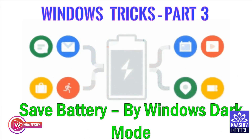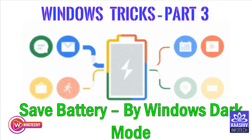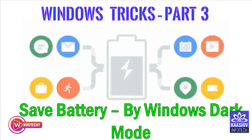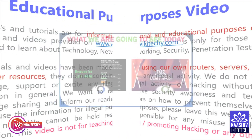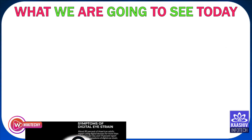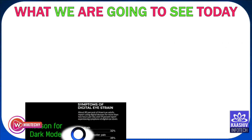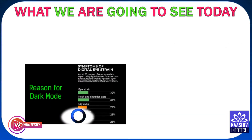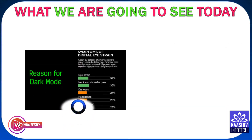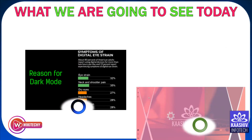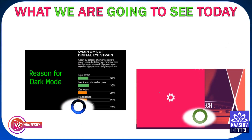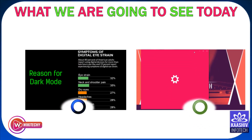So here is our Windows Tricks Part 3 — how we are going to save the battery with Windows dark mode. These are the areas we are going to cover: the reason for using dark mode, and then how to enable dark mode in Windows.